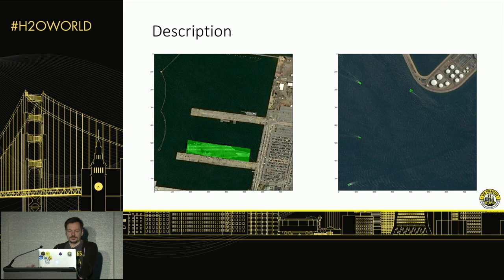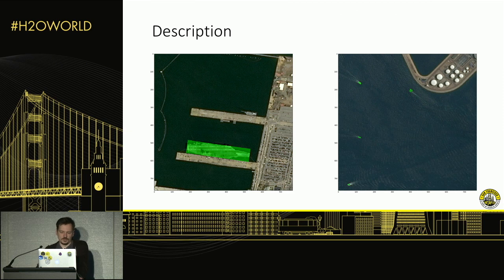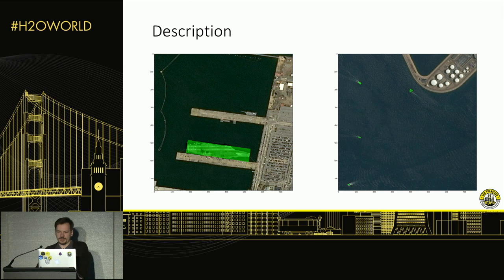There are a couple of interesting things about the data. The size of the ships actually varies a lot — from an aircraft carrier, like on the picture on the left, to some small boats you can find anywhere. Also, in some cases you have two ships close together, so it's actually kind of hard to identify where one ship ends and the next one starts.